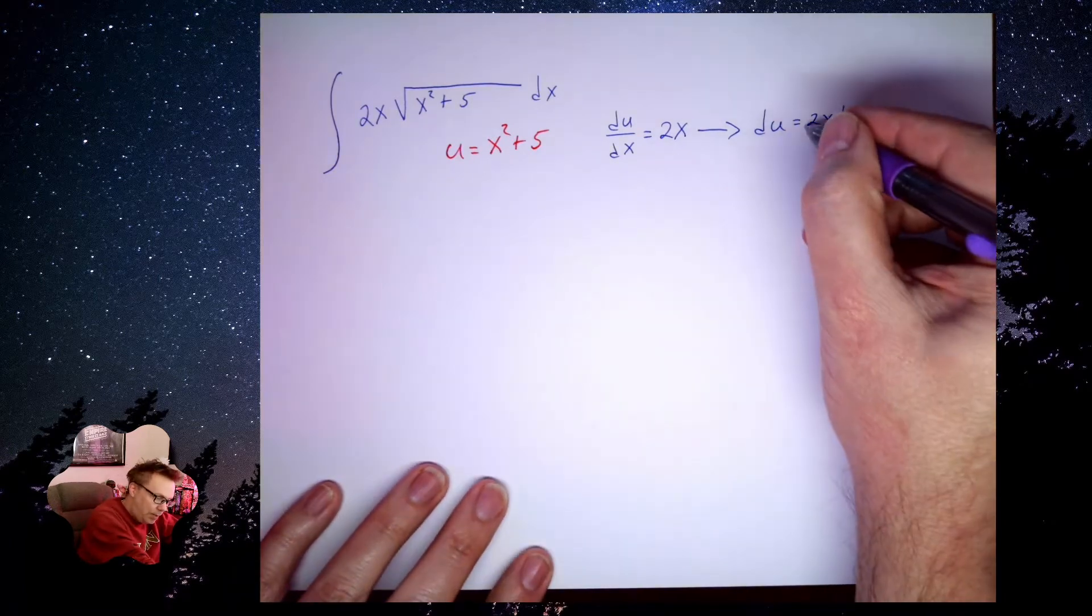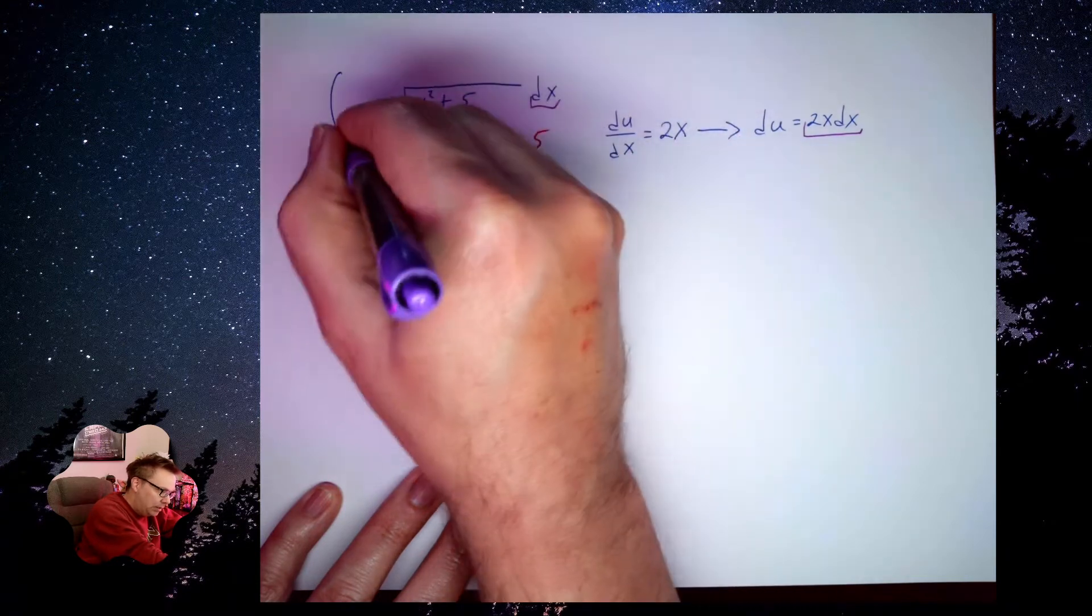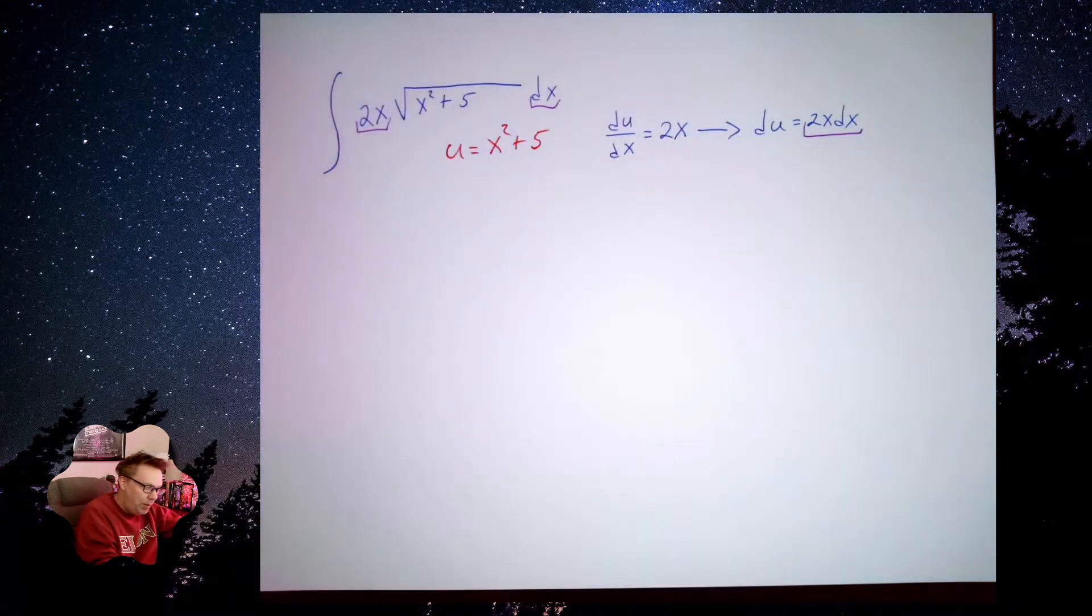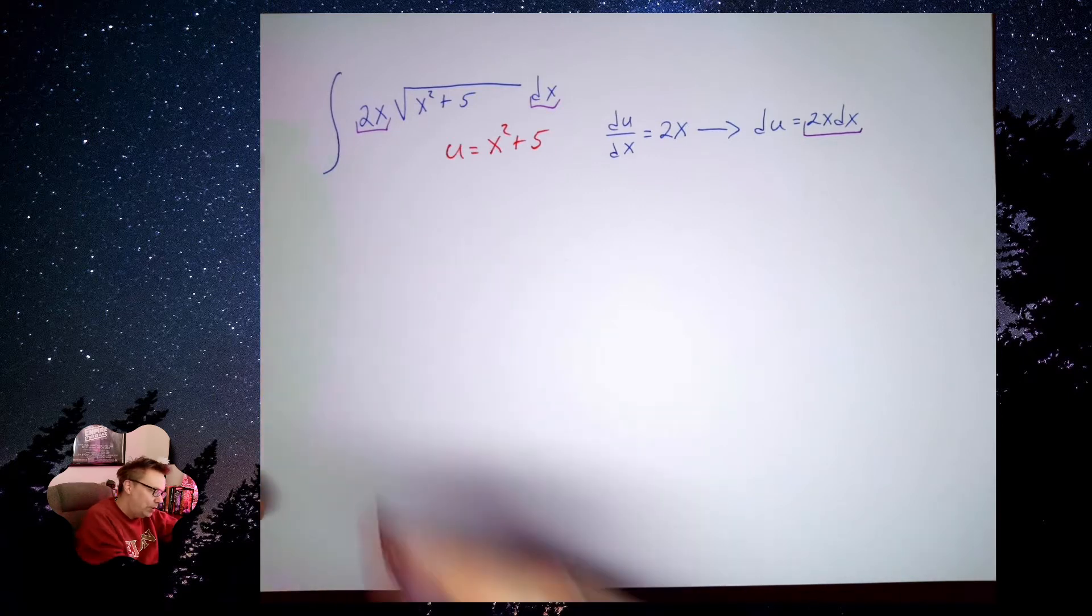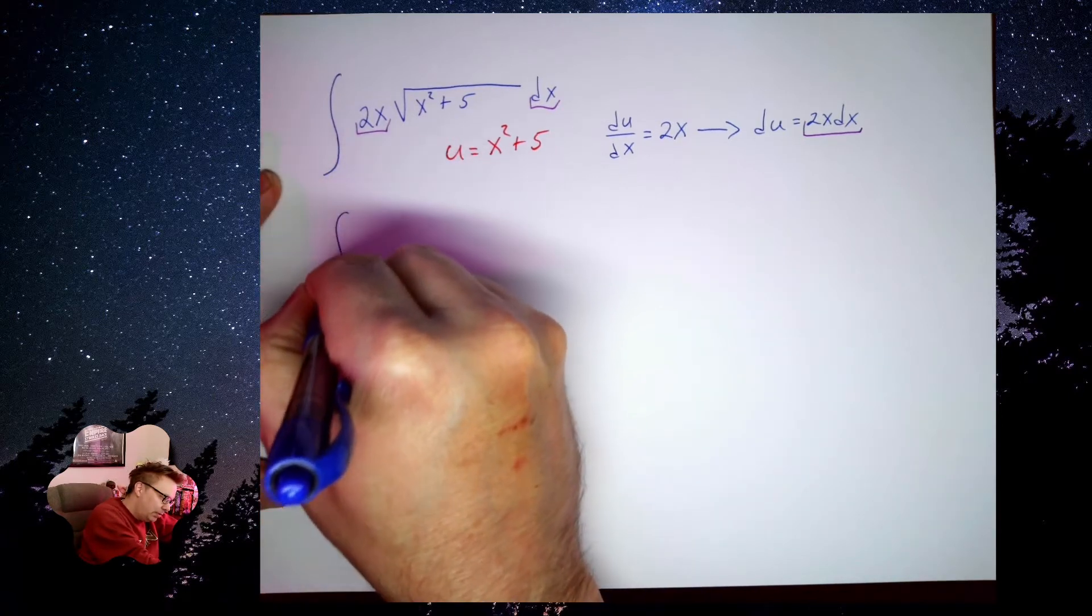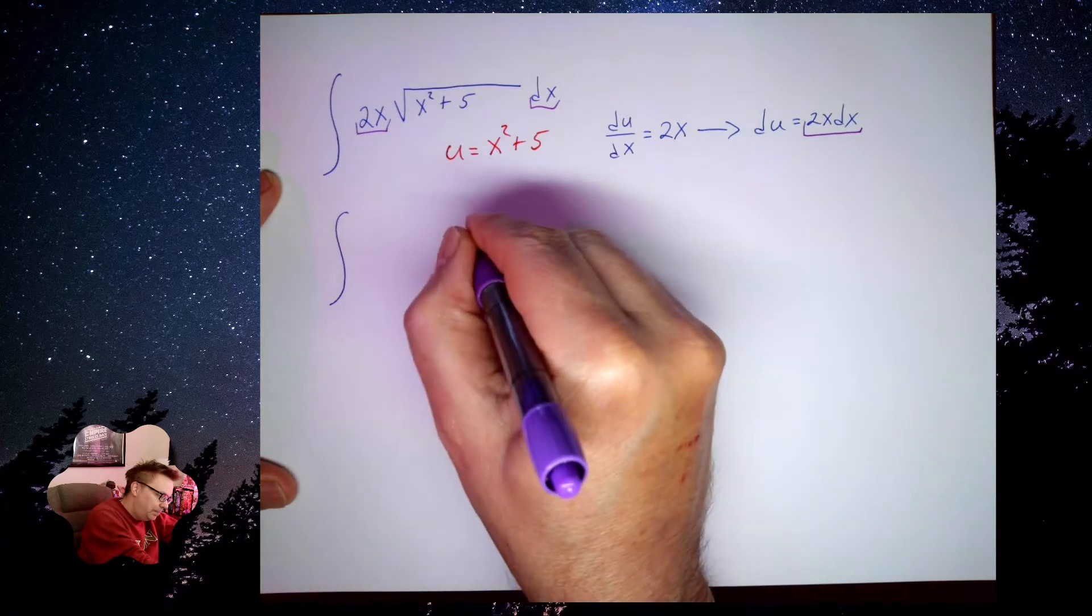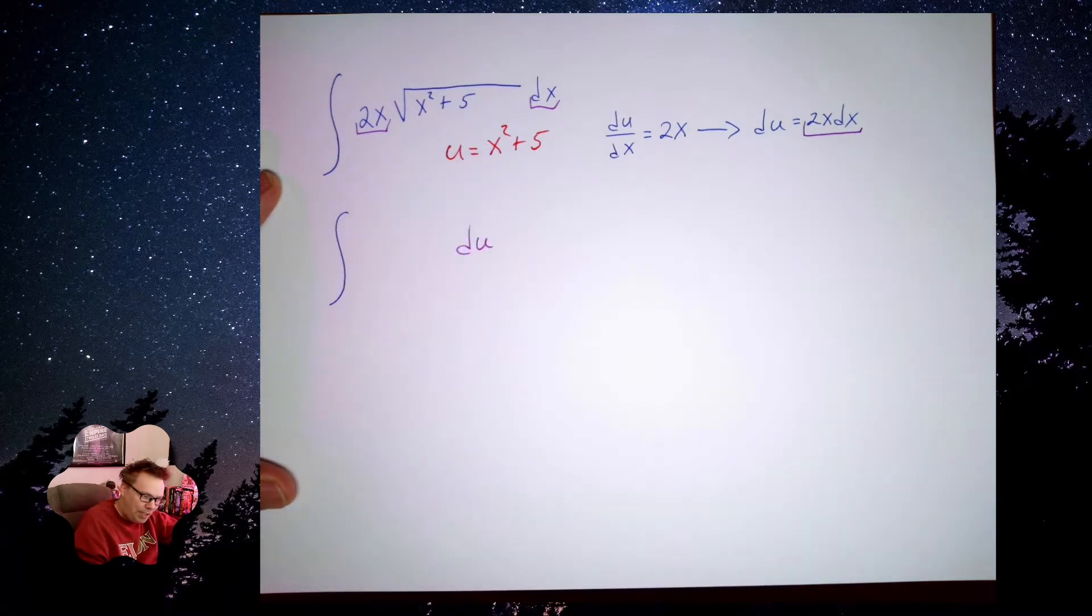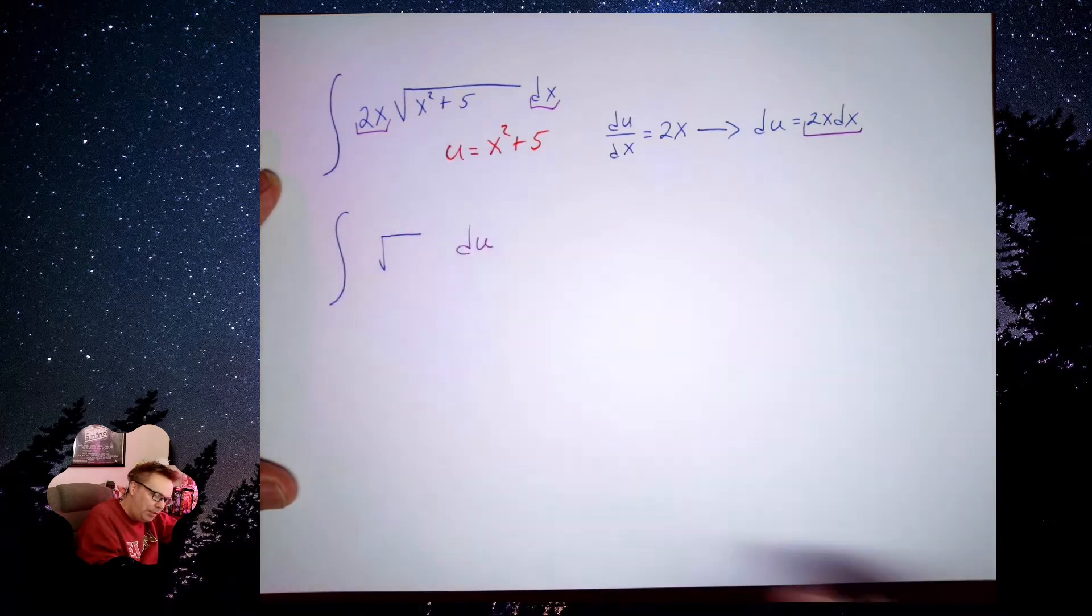2x dx. Purple. I want to try to do this in purple. Well, there's my dx. There's my 2x. Wherever I see this 2x dx, I can replace that with the du. So I have an integral and a du. But I still have the square root stuff. I got the square root of u.